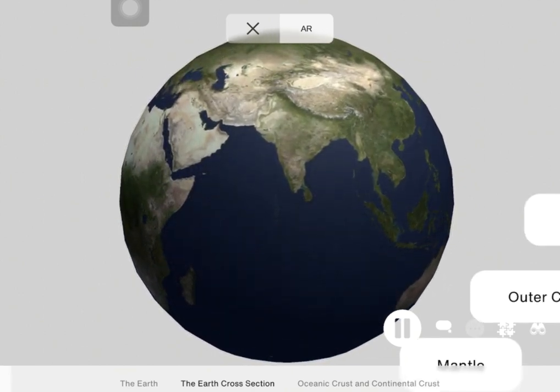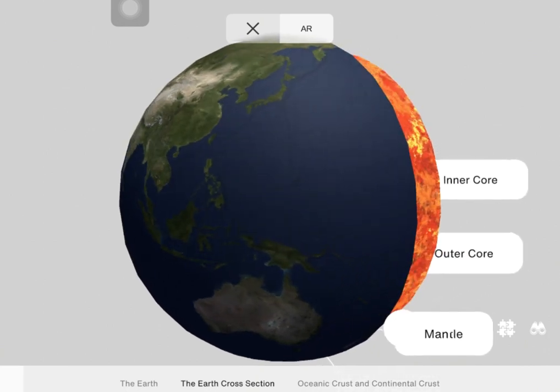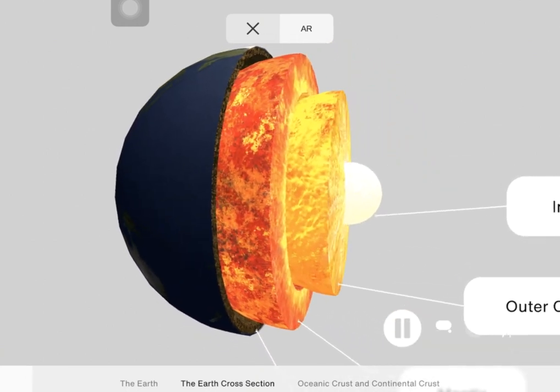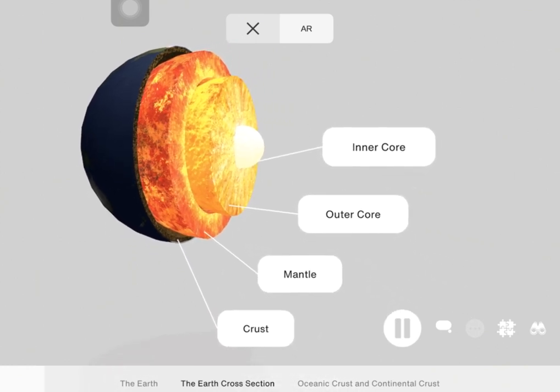Now we move on to the Earth's crust, which is the Earth's hard outer layer. It is less than 1% of the Earth's volume. Now the crust is made up of three different types of rocks: igneous, metamorphic, and sedimentary rocks.